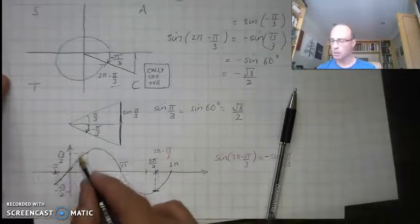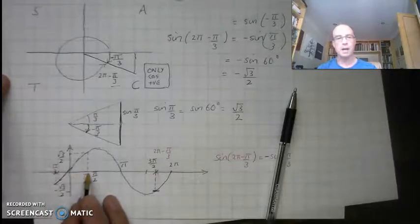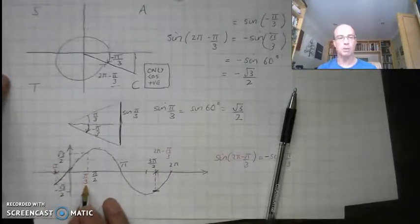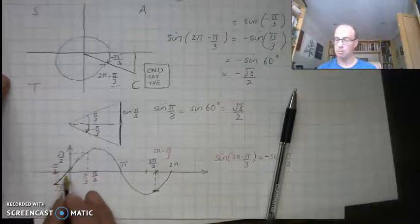I need to use the symmetry on my curve to say that it's going to be the same as sine of π/3. But I've got, it's negative, it's down here, it's below zero.